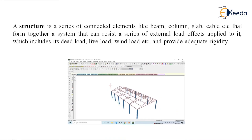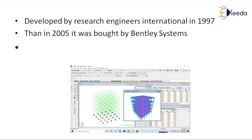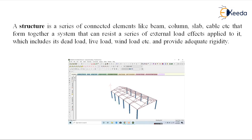A structure is a series of connected elements like beam, column, slab, etc. You can see in this picture there is one building structure made up of beam, column, and slab. If you apply a load on slab, it will transfer to a beam. Beam will transfer its load to a column and column will transfer its load to a footing. This system is made to resist loads like dead load, live load, wind load, seismic load, etc., and provides rigidity to the structure so it remains standing throughout the life of the building.